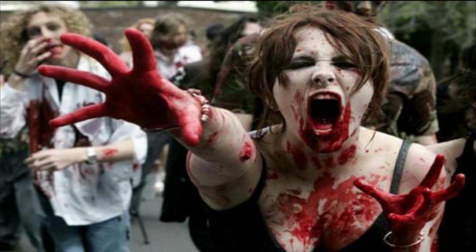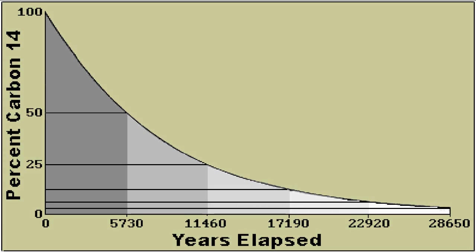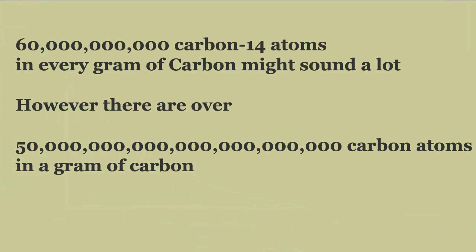Once a living organism dies, he hypothesized, it no longer ingests atmospheric carbon-14. Thus, the proportion of carbon-14 in a dead carbon-based sample is directly related to how long it has been dead, because the amount of carbon-14 will reduce by half every 5,730 plus or minus 40 years. Every living organism, including you, contains around 60 billion carbon-14 atoms for every gram of carbon, and of those 60 billion carbon atoms, about 14 decay every minute.